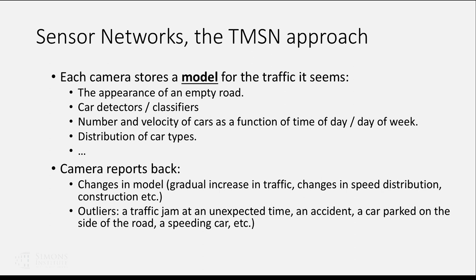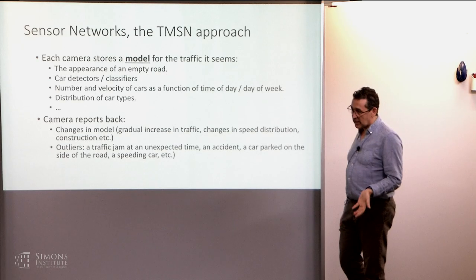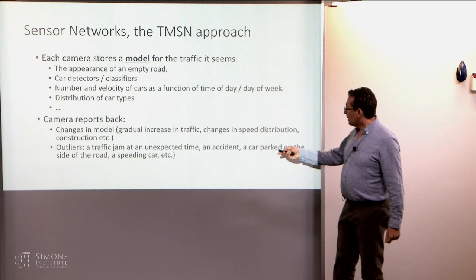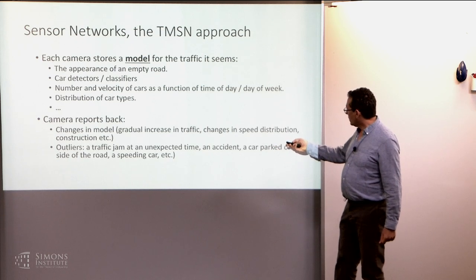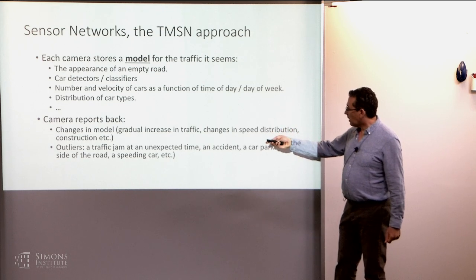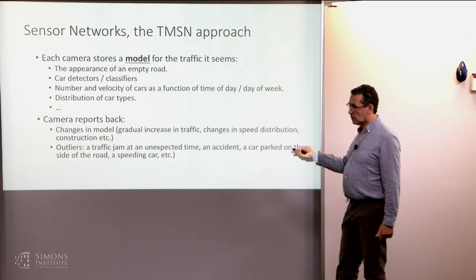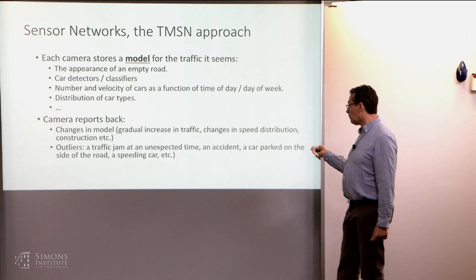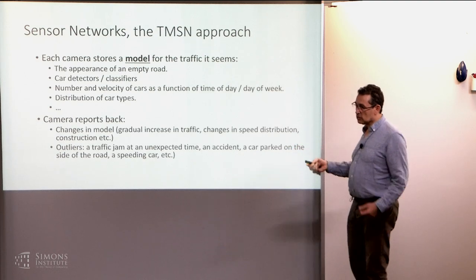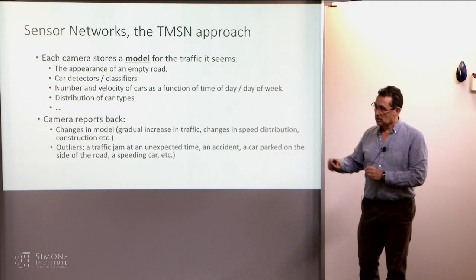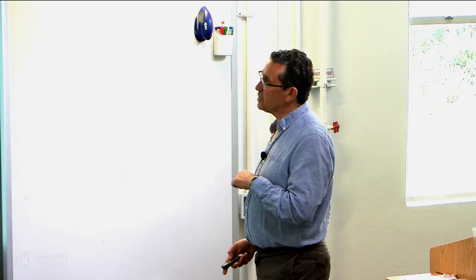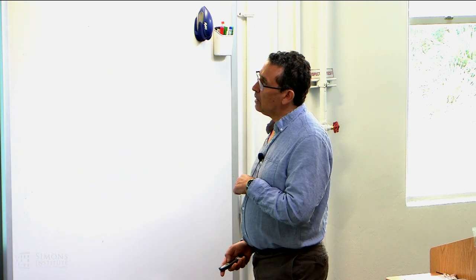And then it reports, of course, the outliers. So the outliers is what you usually really care about. You don't care to know, there's again, on I-95 a traffic jam, and now it's 5 p.m., and there's a traffic jam again. You want to know if there's a gradual increase in traffic, changes in distribution, outliers, like a traffic jam at an unexpected time, or an accident, or a car parked on the side of the road, or a speeding car. Those are outside of your model, and so those you might want to send back. So you minimize how much you're sending back.